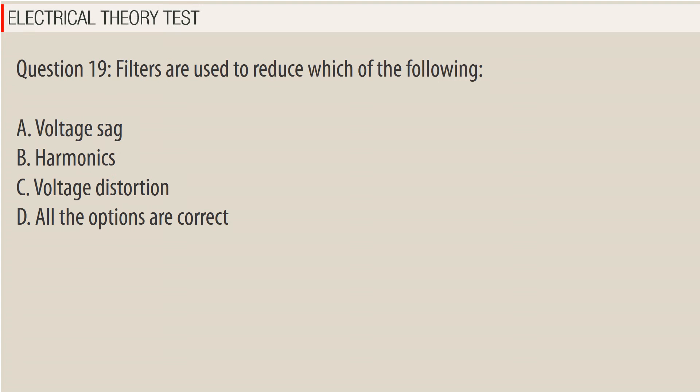Question 19: Filters are used to reduce which of the following? A. Voltage sag. B. Harmonics. C. Voltage distortion. D. All the options are correct.